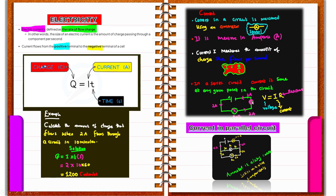There is also a relationship between voltage, current, and resistance: V equals IR. This is another important formula to remember during revision. The voltmeter, which measures voltage, should be connected in parallel with a component because it is a high-resistance device, while the ammeter is always connected in series.